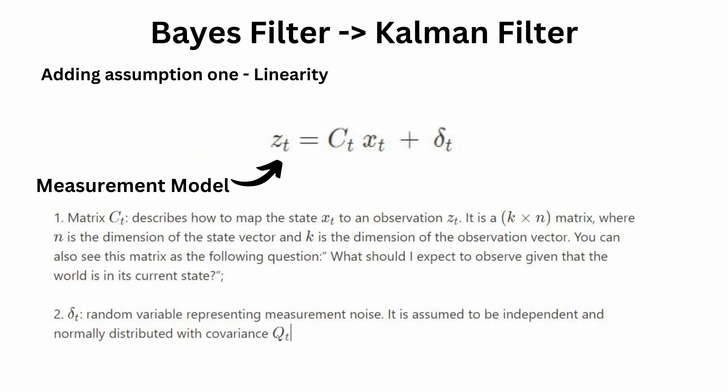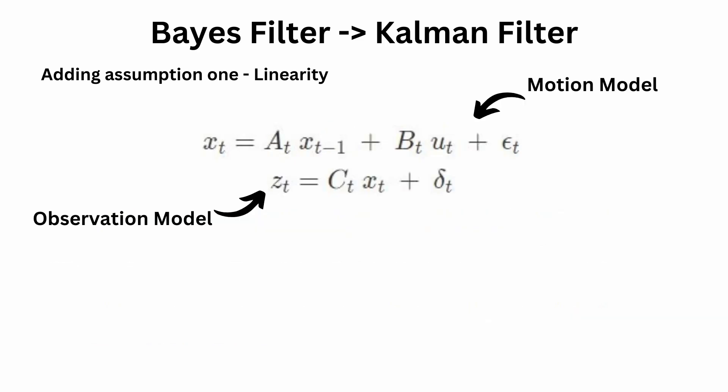Let's also have a linear representation of your measurement model. C(t) is again a matrix allowing us to obtain the expected observation z(t) given the known current system state x(t). In other words, given that we know where the robot is and what the world looks like, we can calculate what we should observe. This variable again represents sensor noise because no sensor is perfect. So we have your linear representation of both your motion model and your measurement model, and both account for noise.